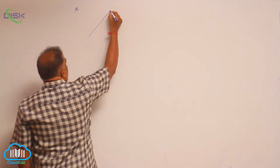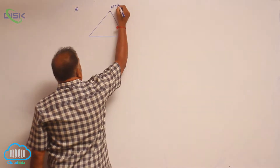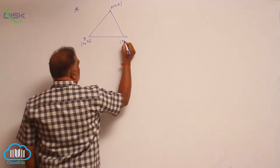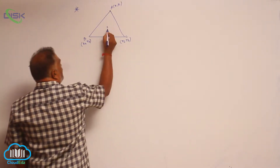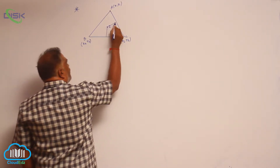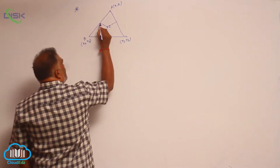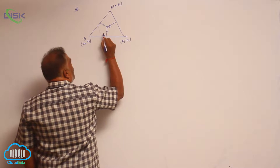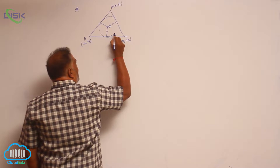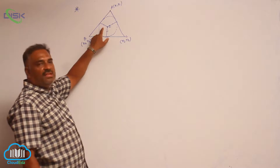Again we will consider the same triangle here. This is A(x1, y1), B(x2, y2), C(x3, y3). Now we observe two important points here. This is the incenter. If you draw a perpendicular from the incenter to each side, all three perpendiculars are equal in length. So you are able to draw a circle touching all three sides of the triangle internally. Now since it is a circle, all three are nothing but radii.